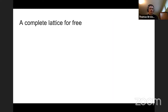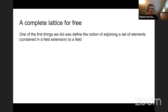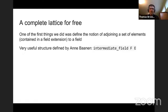I want to say a few things about what we found interesting. One of the first things we did was defining adjoining elements to fields. Initially we did this in terms of the sub-algebra type — if you adjoin an element or a set to F, you end up with an F-sub-algebra of E. But that's not really the right way to think about it; really you want an intermediate field. That type didn't exist when we started, but thankfully someone defined it and it was very helpful.